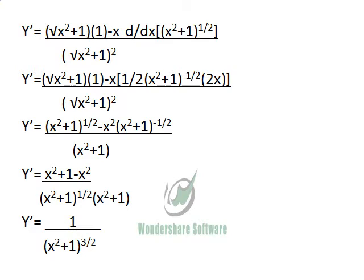So when we start with it, we take the derivative of the bottom, bring it up to the top. And we take the bottom and bring it up to the top, which will give us x squared plus 1. Take the derivative of the top, which will be 1, minus x times the derivative of the bottom, which will be x squared plus 1 raised to the 1 half, divided by the square root of x squared plus 1, all squared at the bottom.